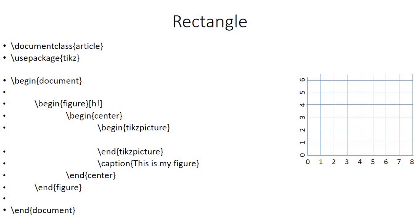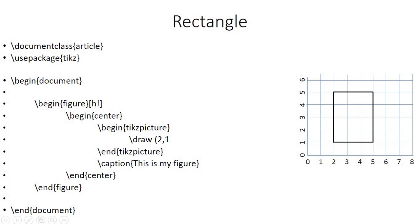Now let's draw a rectangle. The same code will be used, only the coordinates will be different. Suppose the starting point is (2, 1), this line leads to (2, 5), then to (5, 5), then down to (5, 1), and back to the starting point (2, 1). So the command is \draw (2,1) to (2,5) to (5,5) to (5,1) to (2,1); and this will draw the rectangle for you.